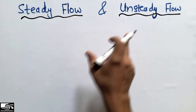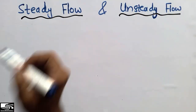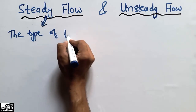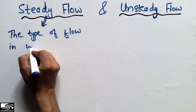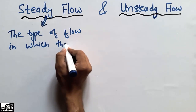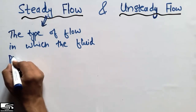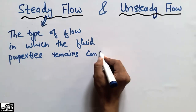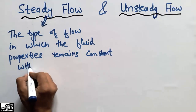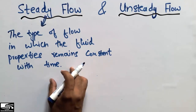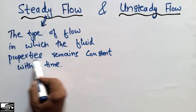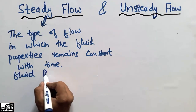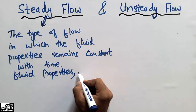In this lecture we are going to differentiate these two types of flow with examples. Steady flow can be defined as the type of flow in which the fluid properties remain constant with time. This type of flow is known as steady flow.